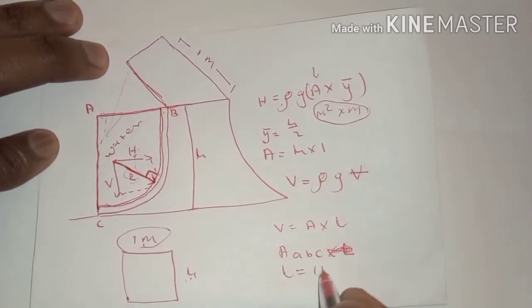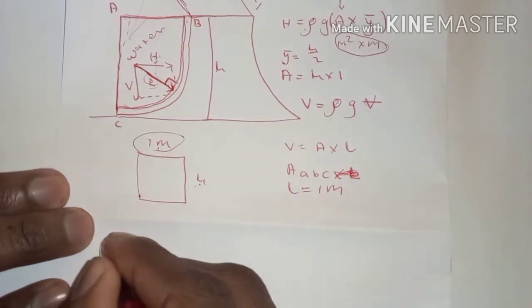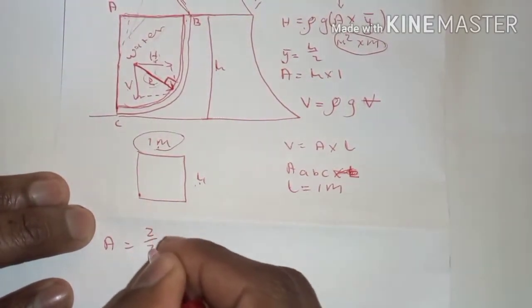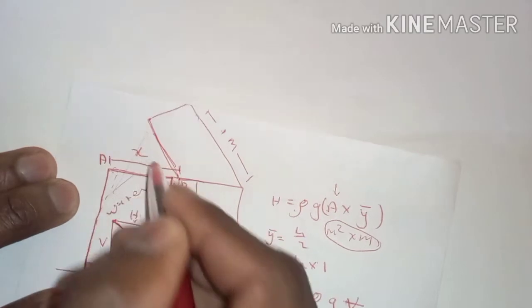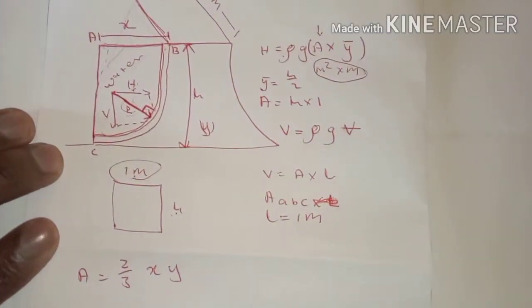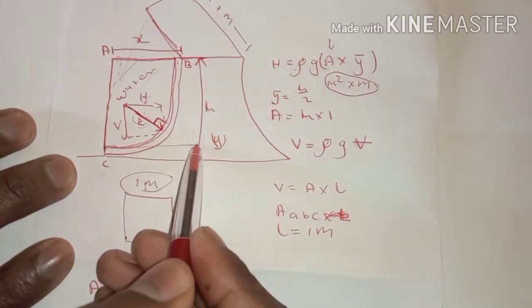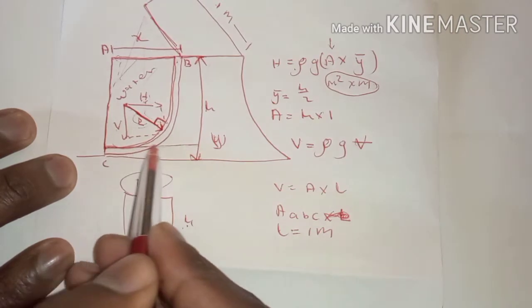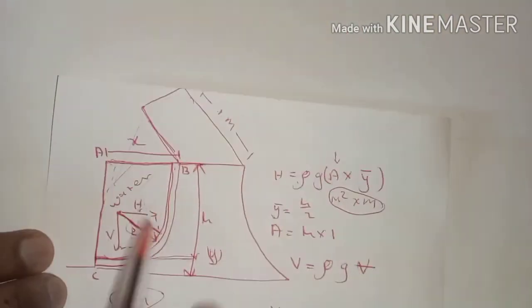The length will be equal to 1 metre unless stated otherwise. The formula to calculate the area of that curved shape is given by two-thirds of x times y, where x is the horizontal distance and y is the vertical distance from the water surface down to the point on the curve.